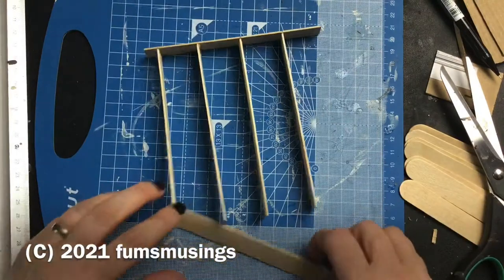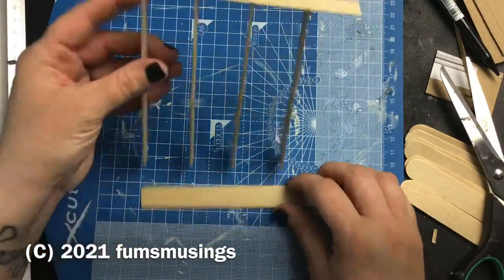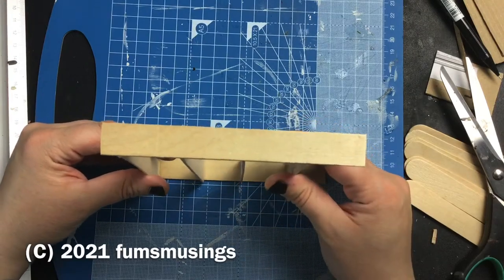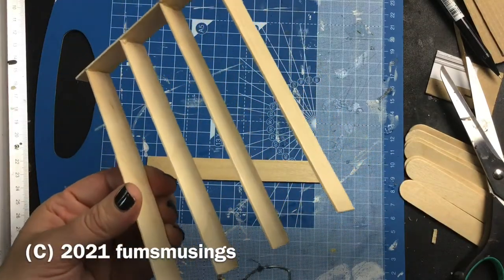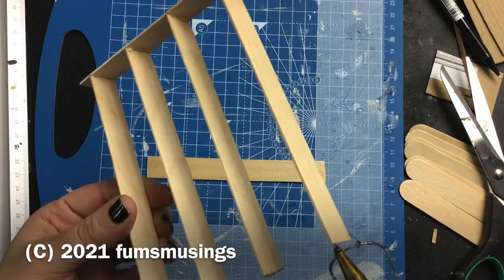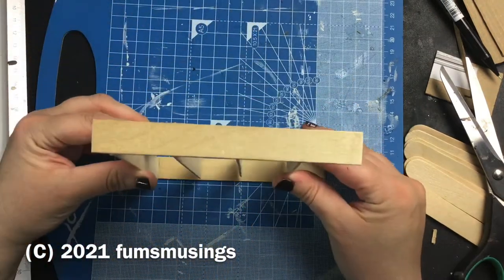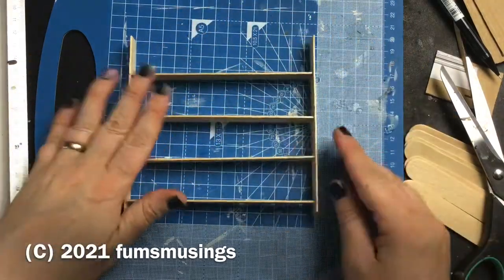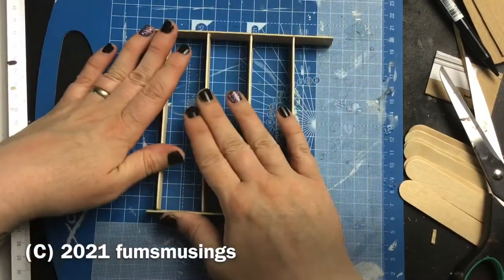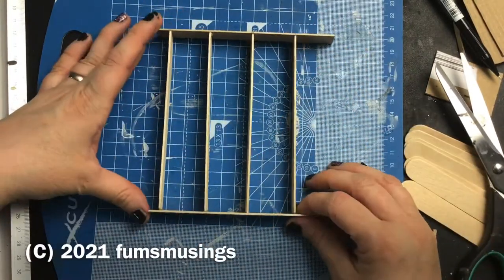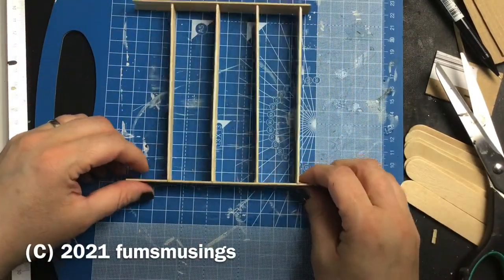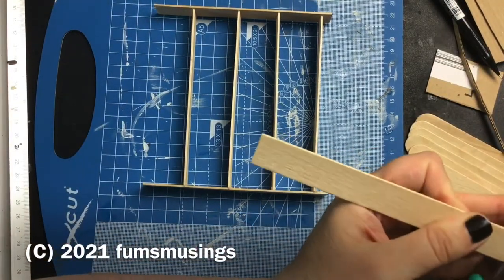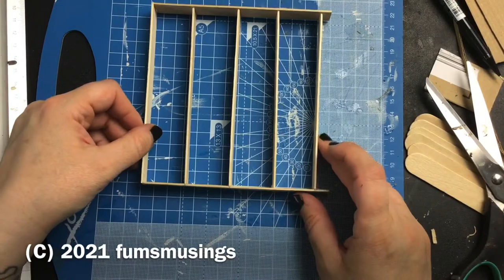I just used whole lollipop sticks, trimmed off the rounded edge. These are the wider ones, like tongue depressor size. I made a basic rectangular shape with dividers in. At this point I'm not worrying about the separate little dividers for each pair of plugs, this is just the basic frame to start off with.